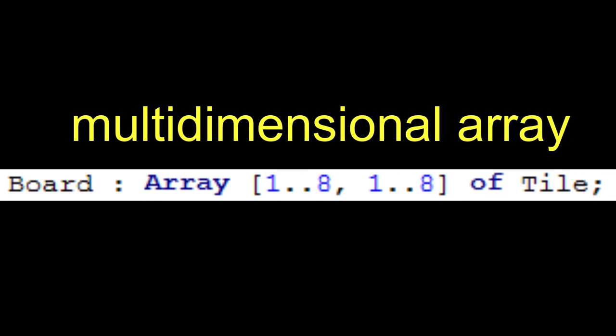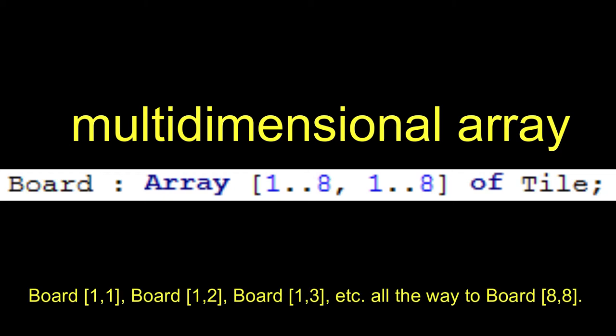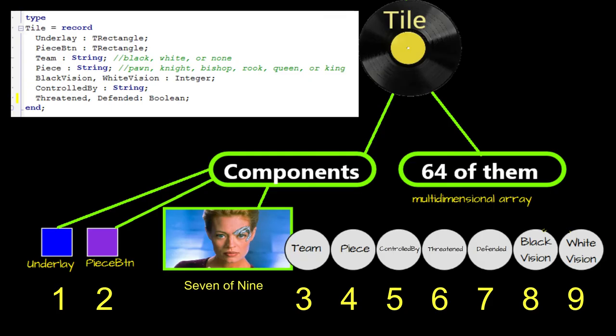That's called a multidimensional array. It still gets me my 64 squares, since 8 times 8 is 64, but they are now named 1,1, 1,2, 1,3, all the way to 8,8. I think that's slicker, but it's a matter of personal preference. Now, let's look at the nine pieces of data each of the 64 tiles contains. Seven of the nine are invisible units of information, but two are rectangles that the user actually sees.